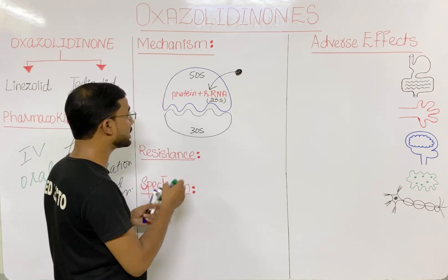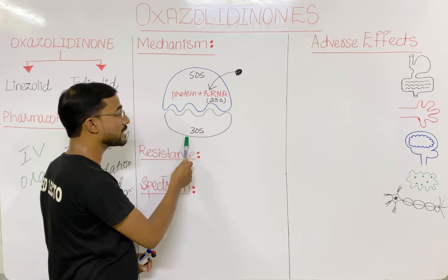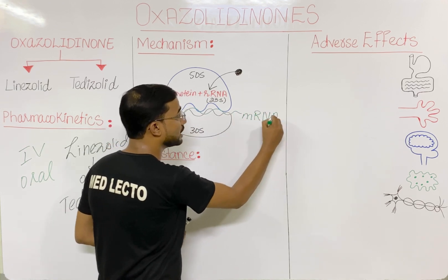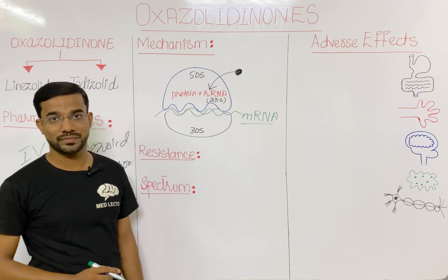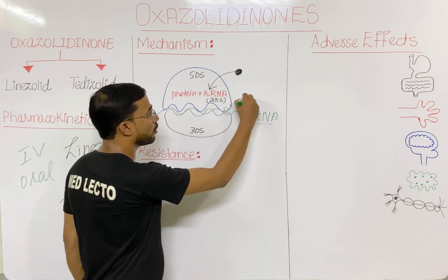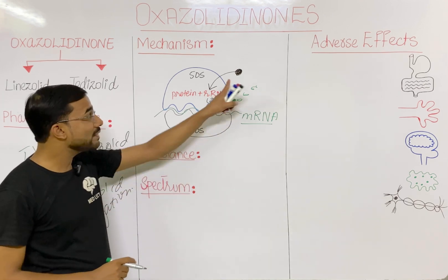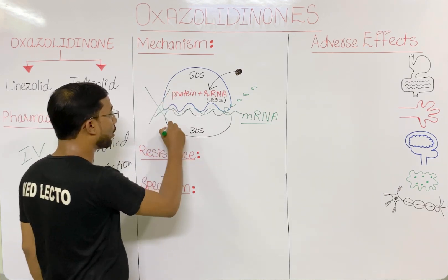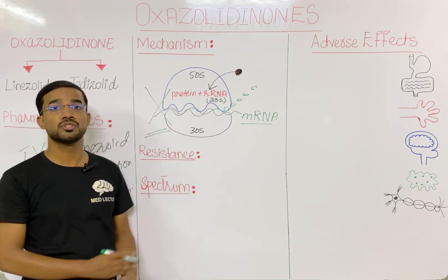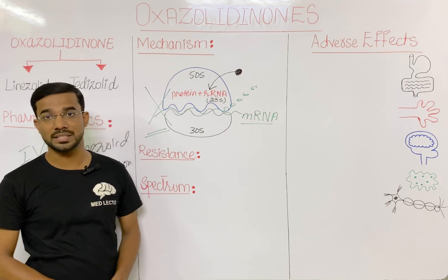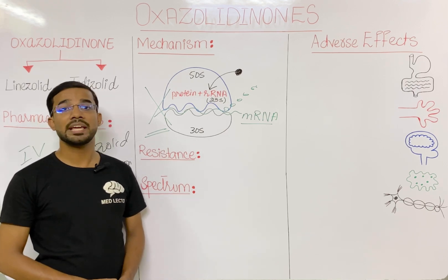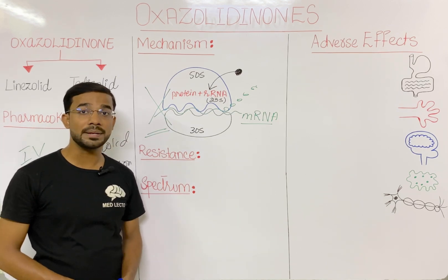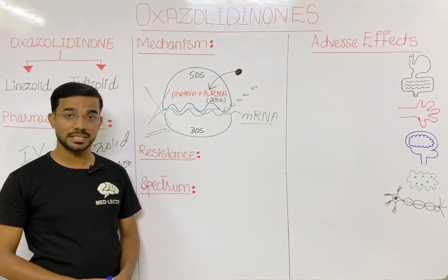When oxazolidinone binds to the ribosomal RNA, it blocks the formation of the initiation complex for protein synthesis. The initiation complex consists of the 50S ribosomal subunit, the 30S ribosomal subunit, and messenger RNA between them. Without the initiation complex, there is no protein synthesis, and ultimately the drug shows a bacteriostatic effect. For some species like Streptococcus, linezolid can be bactericidal.